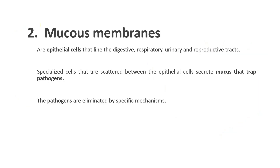Other than skin, the mucous membrane is an epithelial layer that lines the digestive, respiratory, urinary, and reproductive tracts. It has specialized cells scattered between the epithelial cells to secrete mucus that is able to trap pathogens. The pathogens can then be eliminated by several mechanisms.